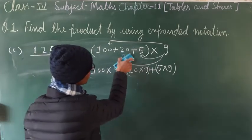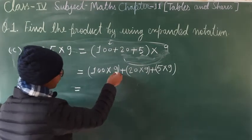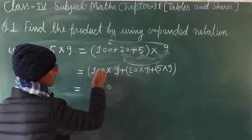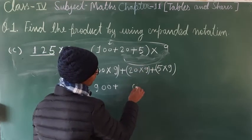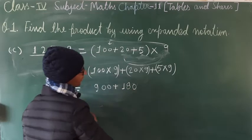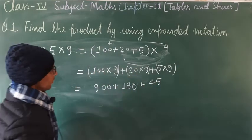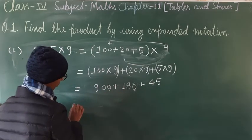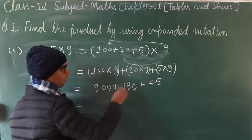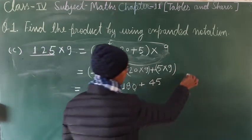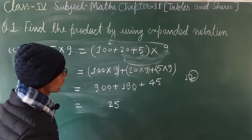Third step: 9 × 100 = 900. Then 9 × 20: 9 × 2 = 18, so 20 × 9 = 180. Then 9 × 5 = 45. Now adding: ones place 5 + 0 + 0 = 5; tens place 4 + 8 + 0 = 12, write 2 and carry 1.